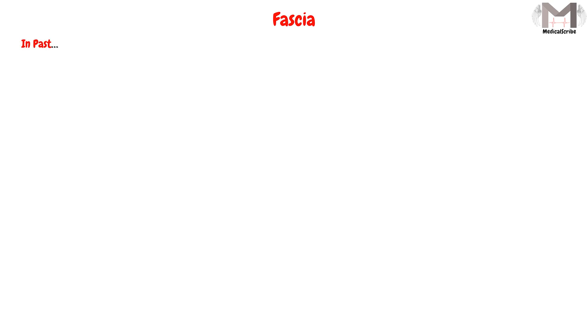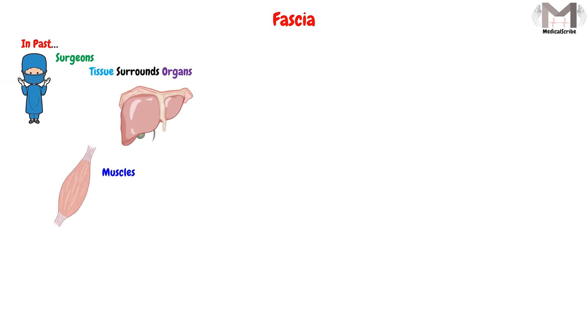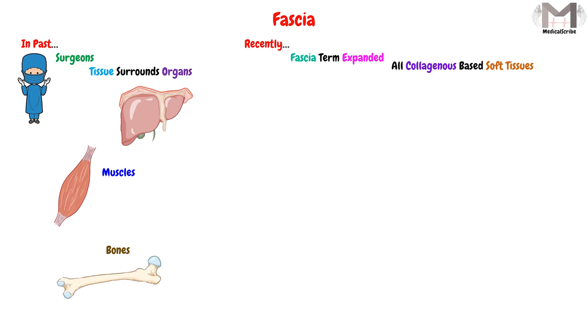Traditionally, or in the past, the fascia was used primarily by surgeons to describe the tissue that surrounds the organs, muscles, and bones. While recently, the fascia term has expanded to include more structures, in which they included all collagenous-based soft tissue in the body.